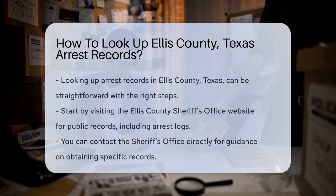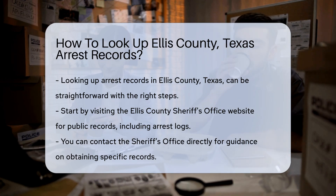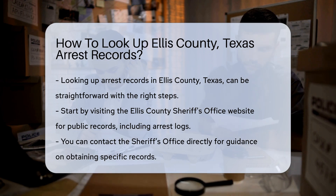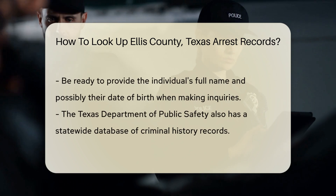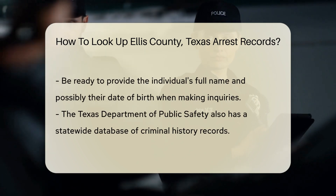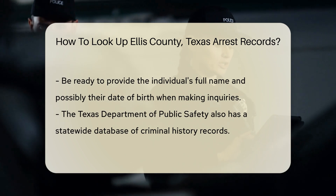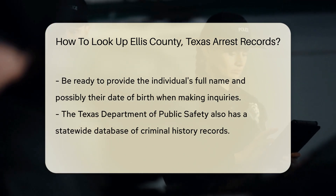Looking up arrest records in Ellis County, Texas can be straightforward if you know where to start. First, you can visit the Ellis County Sheriff's Office website. They often provide access to public records, including arrest logs. You can also contact the Sheriff's Office directly — their phone number is available on their website, and they can guide you on how to obtain specific records. Be prepared to provide details like the full name of the individual and possibly their date of birth.